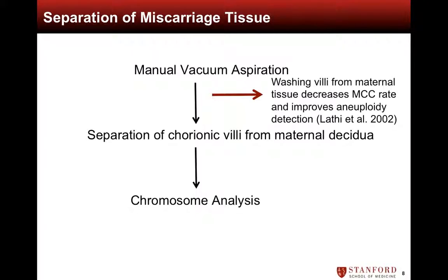The technique of separating villi from decidua was originally described by our group in a study in 2002, when we found that the incidence of 46XX results was significantly reduced by washing villi, and the detection of aneuploidy was significantly increased, demonstrating that simple changes in technique can lead to large improvements in the success of chromosome analysis.